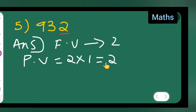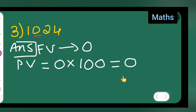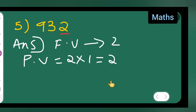I hope you all have understood how to write the face value and place value of the underlined digit. You can take down all this. Don't forget to like, share, and subscribe. Thanks for watching.